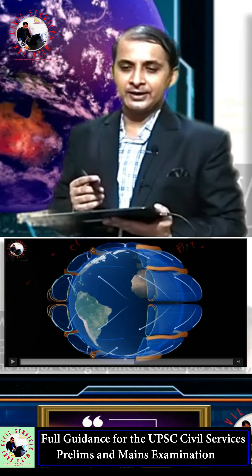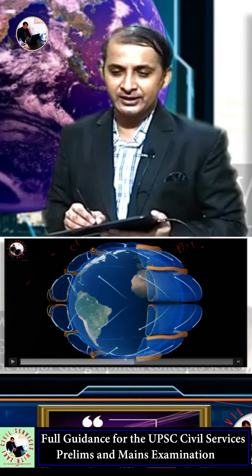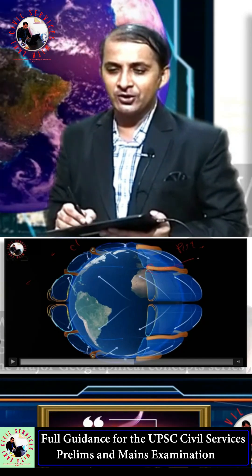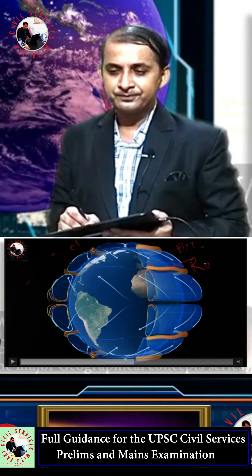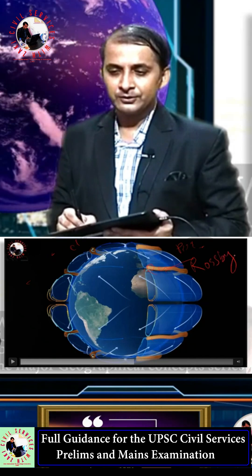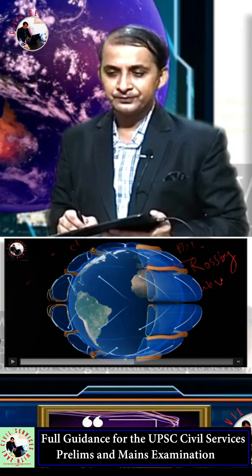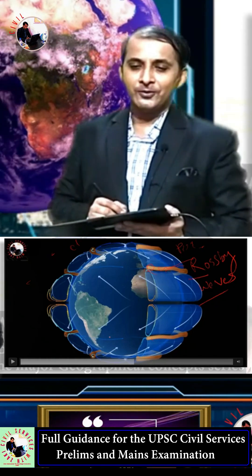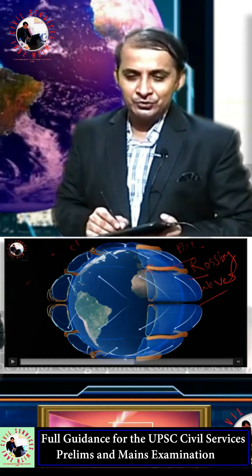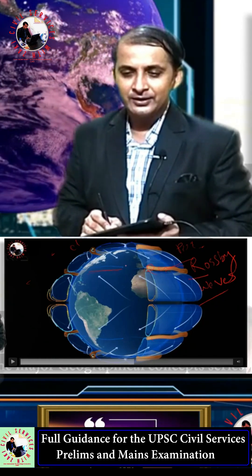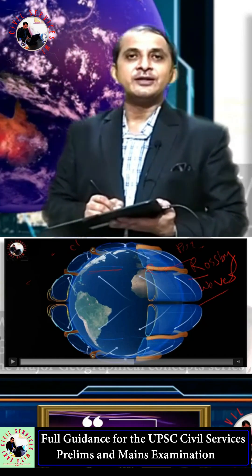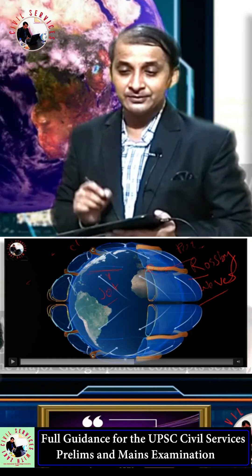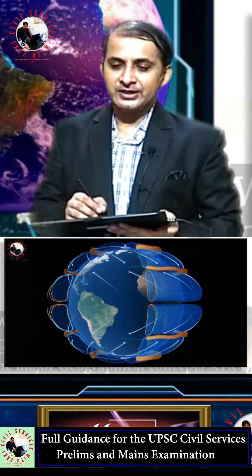Here you can see a tube-like, wave-like structure — this is called Rossby waves. These wave-like structures are Rossby waves. You can also see fast-blowing winds; these winds are called jet streams.